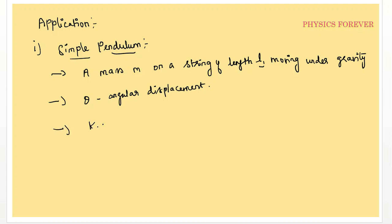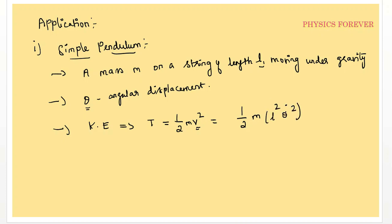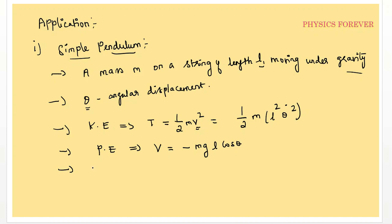How to write kinetic energy for the simple pendulum: T equals one-half m v-squared, and since v equals l times theta-dot, this becomes T equals one-half m l-squared theta-dot-squared. For potential energy, choosing the lowest point as reference: V equals minus m g l cos theta. So the Lagrangian L equals T minus V equals one-half m l-squared theta-dot-squared plus m g l cos theta.